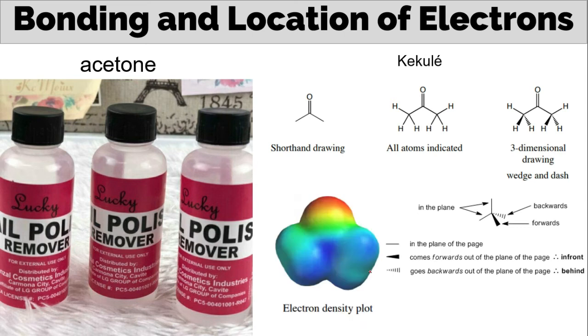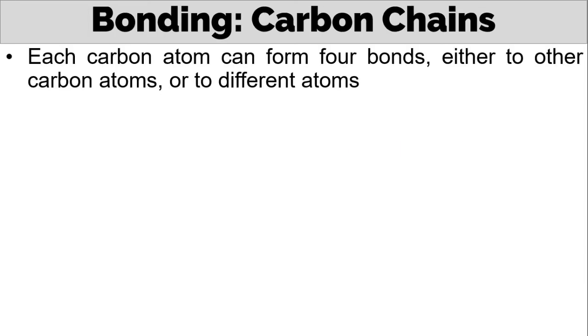Last, we have the electron density plot. It's a figure or graph that shows the probability where the electron of an atom can be found. This is not commonly used.